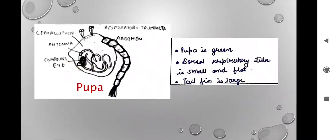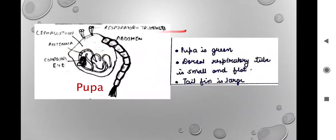Talking about the pupa — in this case it is greenish in color. The dorsal respiratory tube is small and flat. You will see the compound eye, antennae, and the cephalothorax — cephalo is for head and thorax is for the thoracic region, which are fused here, hence called cephalothorax. Then there are respiratory trumpets, which are the respiratory structures as spiracles are in larvae. And the tail fin, which is large. This is the identification of the pupa of Anopheles.